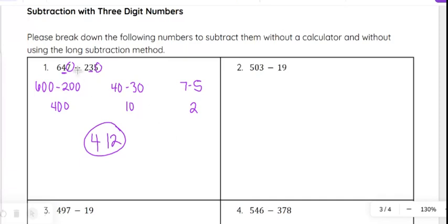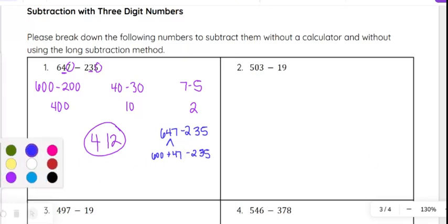I wouldn't necessarily be writing this out if I were doing this on the test, but 600 minus 200, and then 40 minus 30, and then 7 minus 5. 600 minus 200 gives me 400, 40 minus 30 is 10, 7 minus 5 is 2. So that's 412 as your final answer on that one with subtraction.